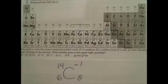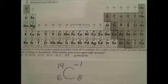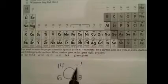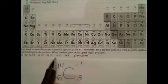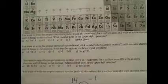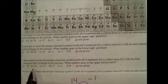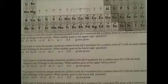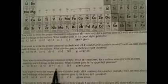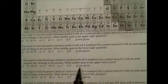So that's the isotopic notation, and this gives us the answers for three, four, five, and six. Number three: what's the number in the upper right? That's negative one, option E. Number four: what number goes in the lower right? That's going to be eight, option F. Number five: we're looking for the upper left position — that's 14, option B. And number six: what goes in the lower left? That's the number of protons, which is six — not given.